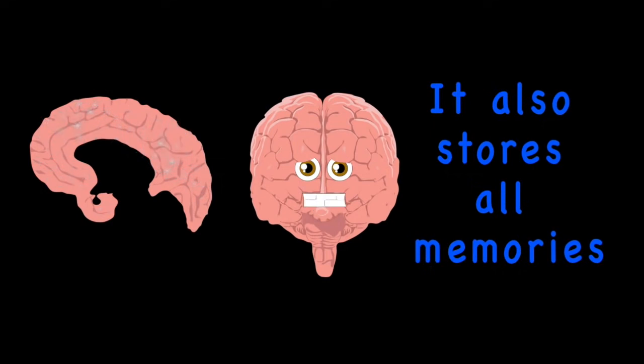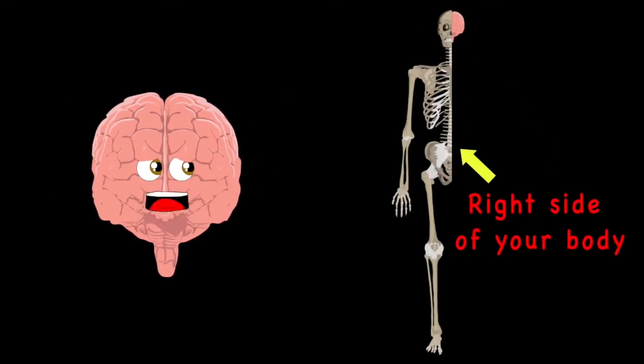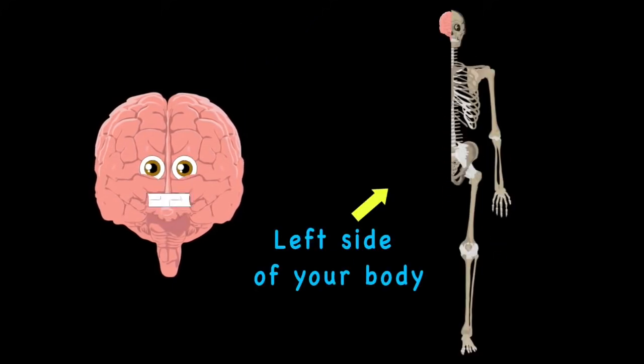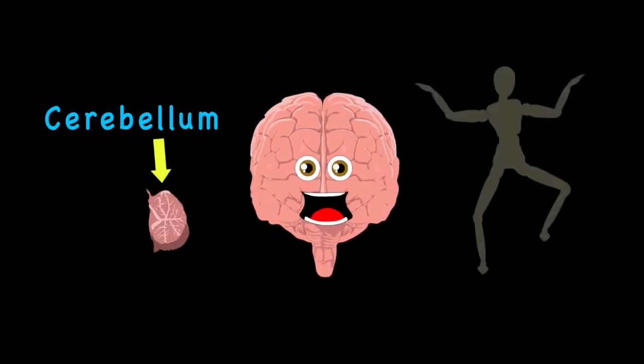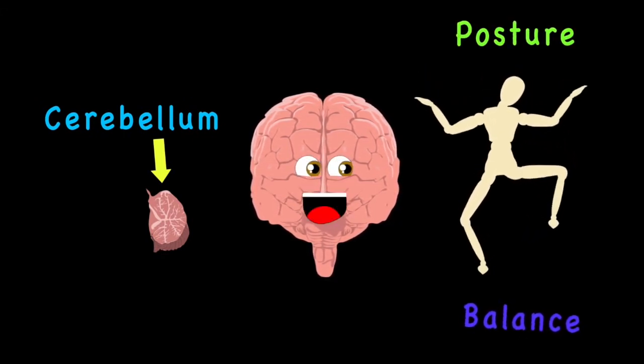The left cerebrum controls the right side of the body, and the right cerebrum controls the left though it is tiny. The cerebellum controls your posture and your balance.